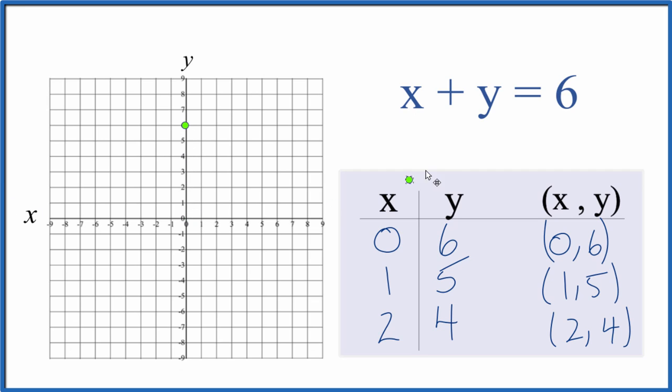Then we go to x is 1, y is 5. And our third point, x is 2, y is 4. You can see we have our line there.